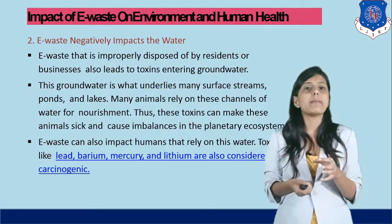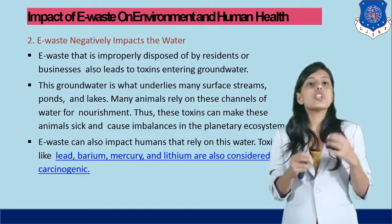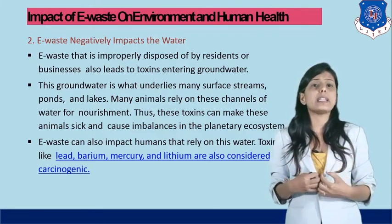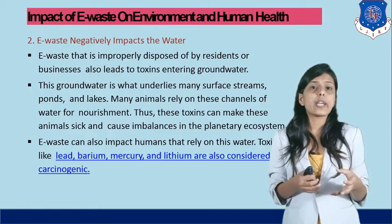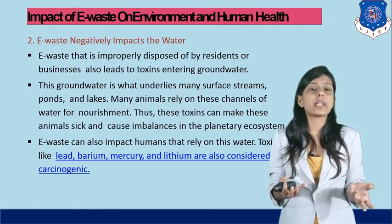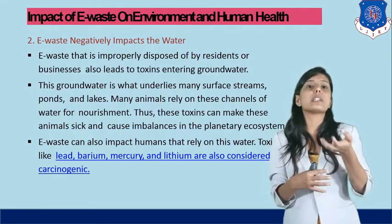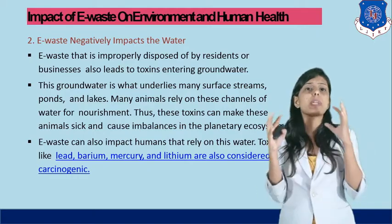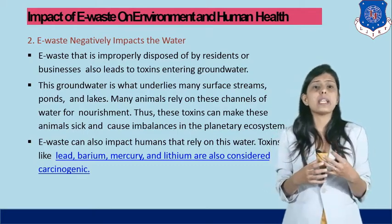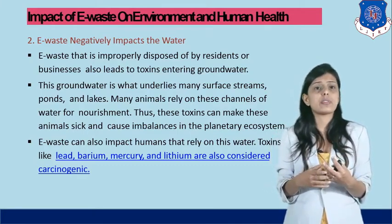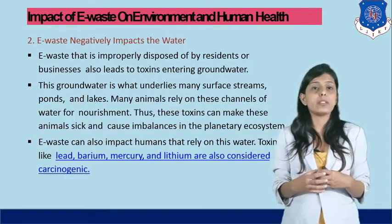When toxic elements enter the groundwater, that water is also passed to many surface streams. When animals consume that water, their systems are affected. If the animals are affected, the whole ecosystem is affected — since we are also dependent on animals, it ultimately affects us as well. The metals used in electronic components are very, very dangerous and can affect human health very badly if we dispose of electronic waste improperly on land.